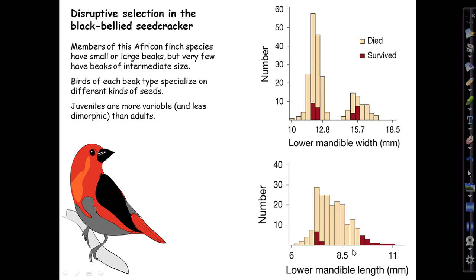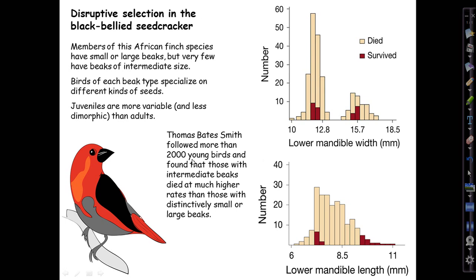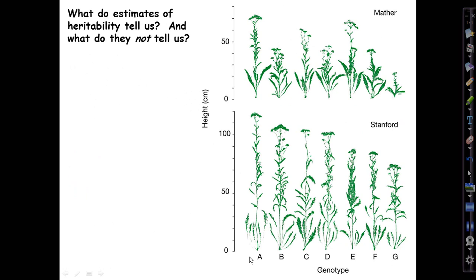Lower mandible length is initially unimodal, but selection — apparently based on survival — eliminates the middle mandible lengths of around 7–9 mm, leaving smaller and larger peaks corresponding to the two remaining peaks of mandible width. Biologist Thomas Bates Smith heroically followed more than 2,000 young birds and found that those with intermediate beaks died at much higher rates than those with distinctively smaller or larger beaks, apparently because they weren't good at eating either of the two kinds of seeds widely available in their environment.